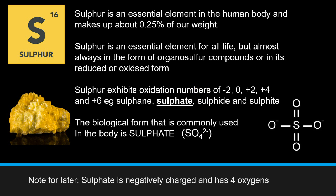Biologically, sulphur is usually in its organosulphur form or in its reduced or oxidised forms. Sulfur exhibits oxidation numbers of minus 2, 0, plus 2, plus 4, and plus 6, and these correspond to compounds such as sulphane, sulphate, sulphide and sulphite — forms you may have come across before.